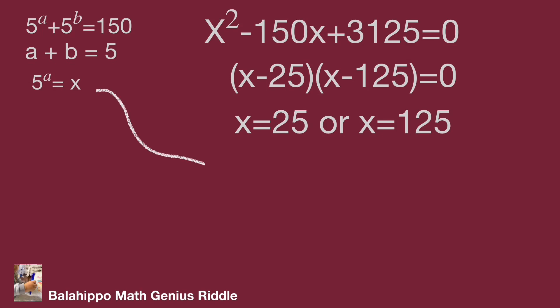And 5 power of a equal to x. Then 5 power of a equal to 25 equal to 5 squared, so a equals 2, b equals 3, and a multiply b equal to 6.